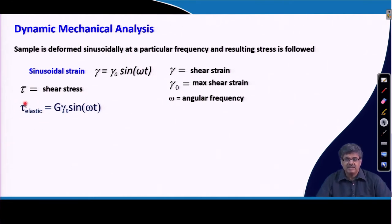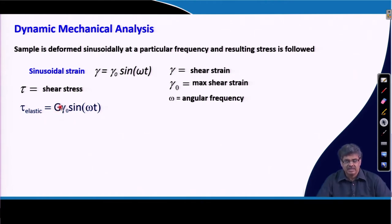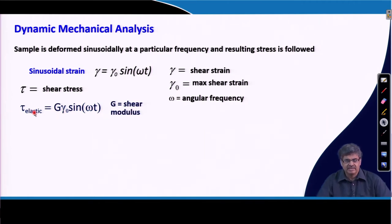If this is a completely elastic material — a perfect solid — then the stress will be proportional to the applied strain. The stress is proportional to the strain, and G is the proportionality constant, which is nothing but the modulus. In this case, since we are applying shear strain, G is the shear modulus. If we are applying tensile stress and tensile strain, then we can call this the tensile modulus.